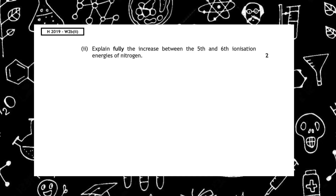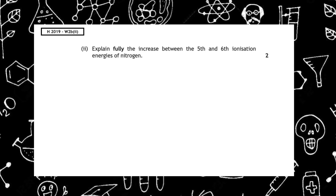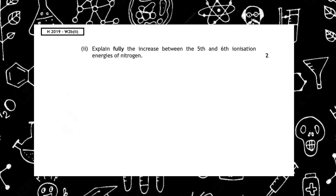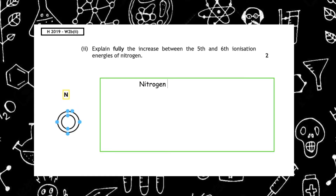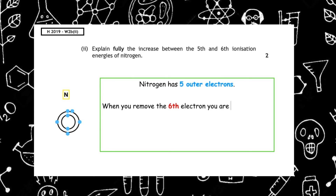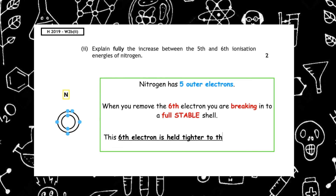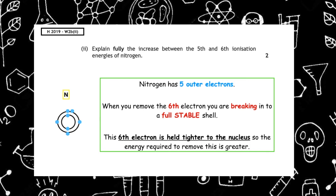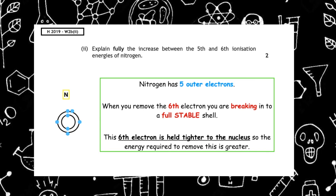Part 2 of this question asks us to explain fully the increase between the fifth and sixth ionization energies of nitrogen. If we look at the electron arrangement of nitrogen, it has five outer electrons. When you remove the sixth electron, you are breaking into a full stable shell. This sixth electron is held tighter to the nucleus, so the energy required to remove this electron is much greater.